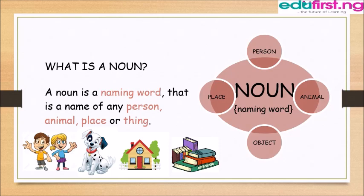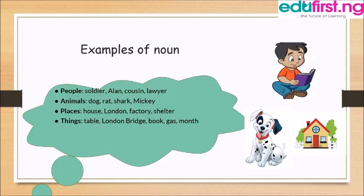Everything needs a word to describe it. Examples of nouns in the form of a person can be David, man, scientist, footballer, dancer.